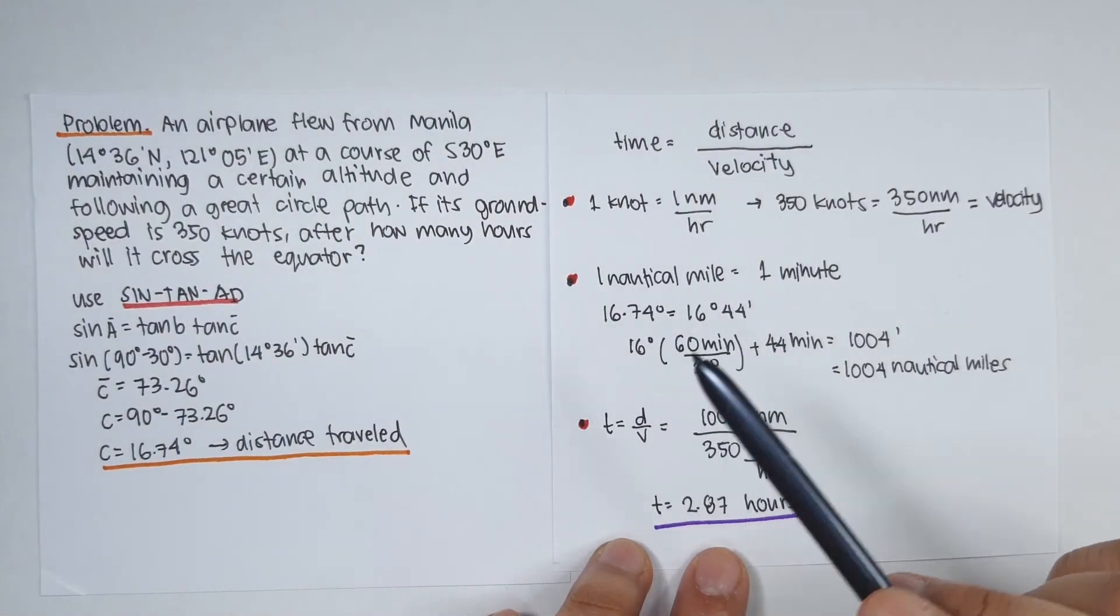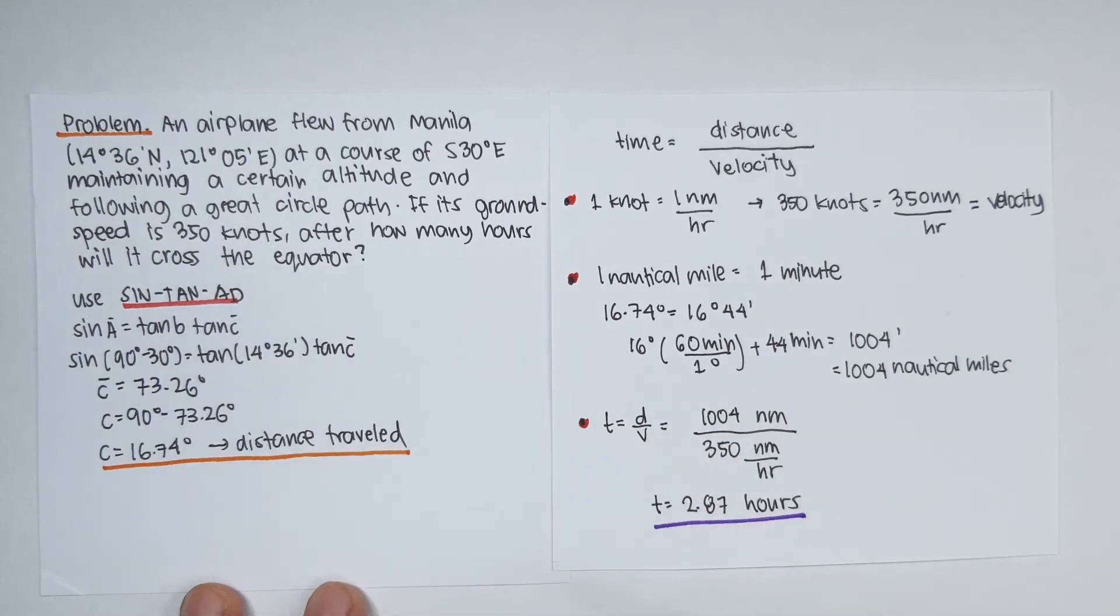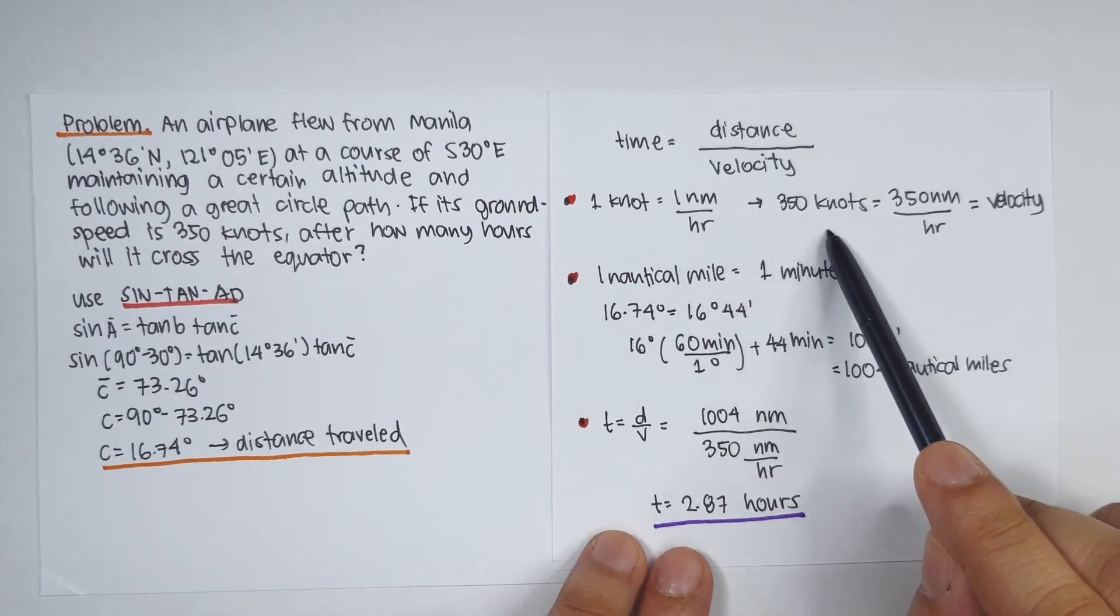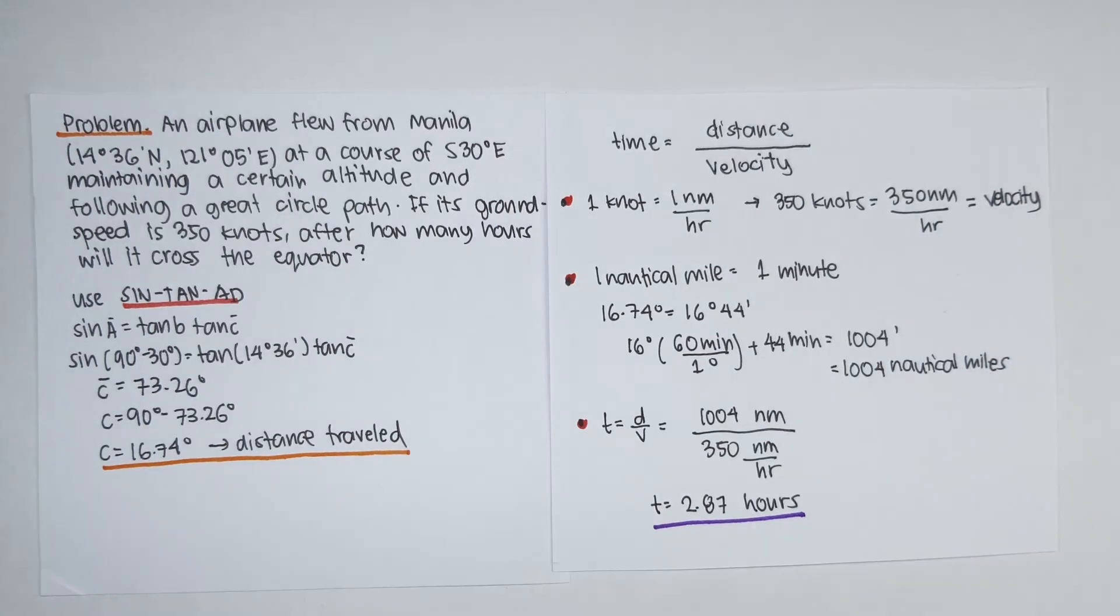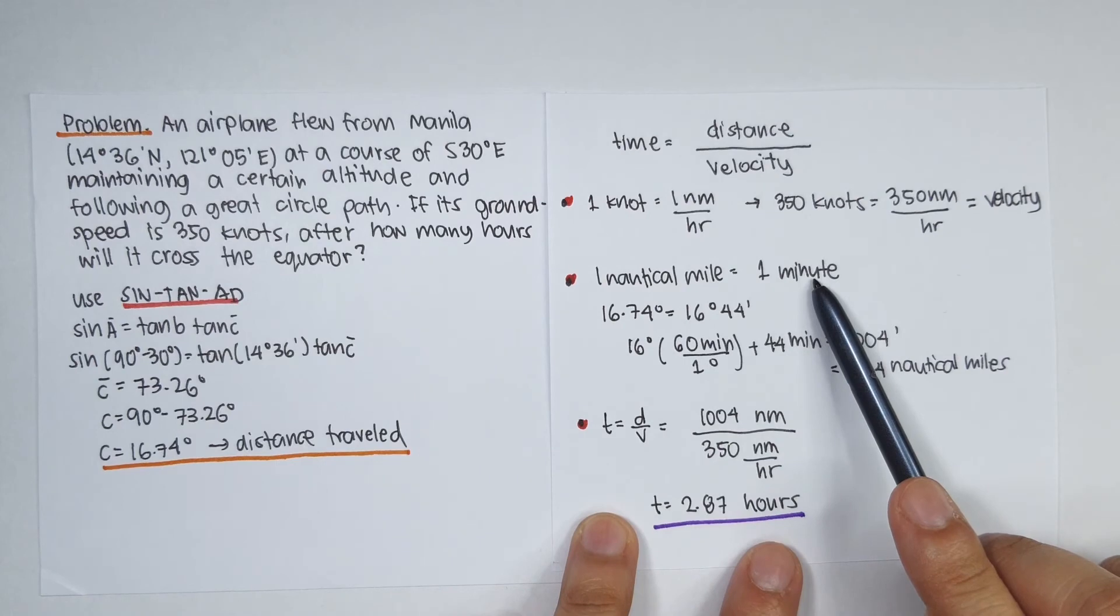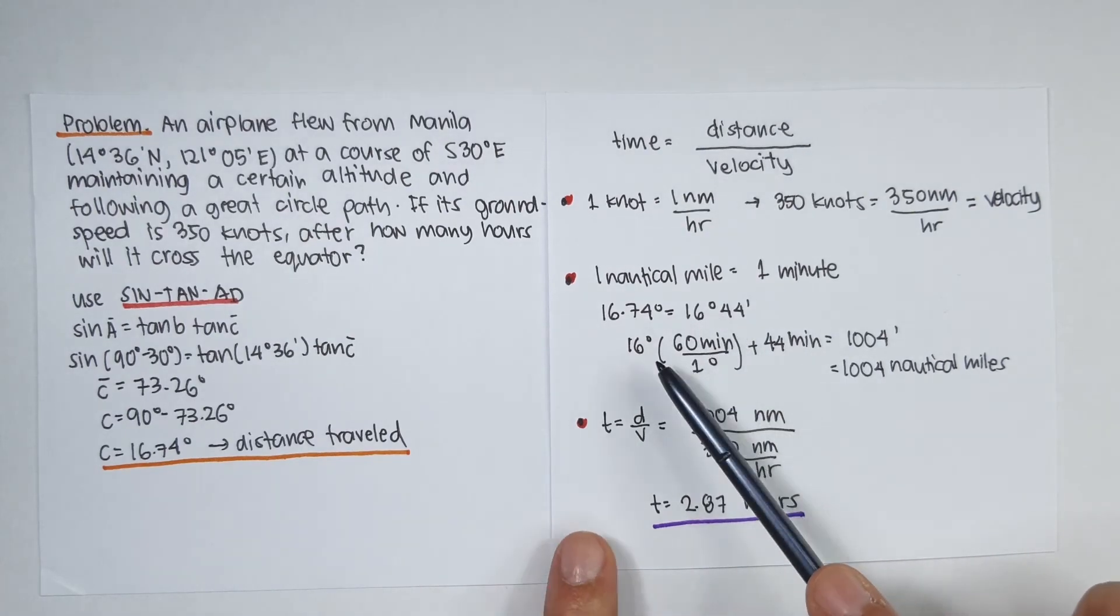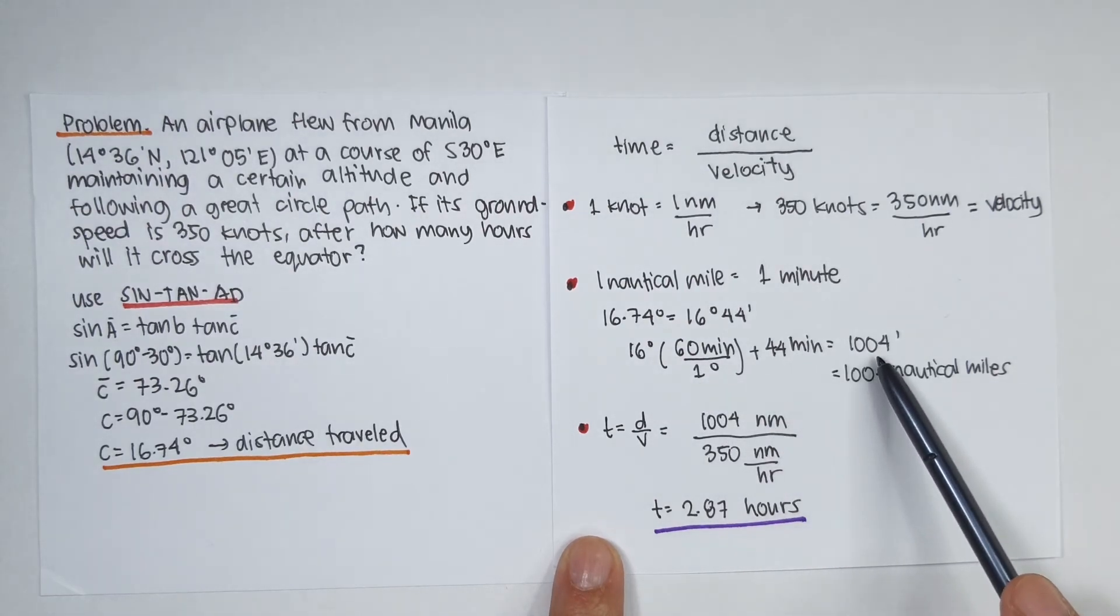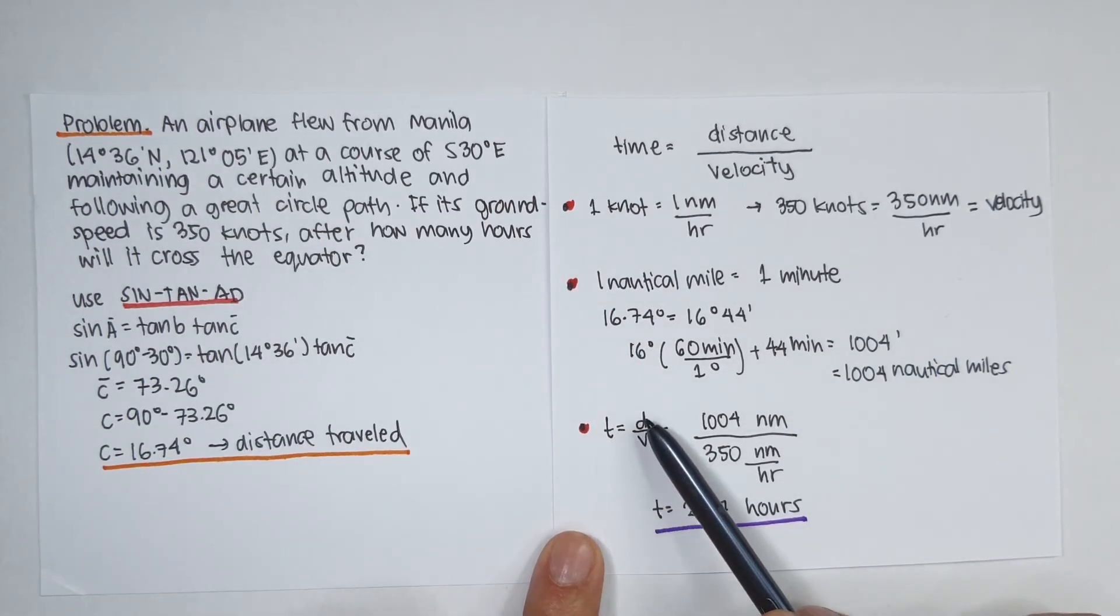So to solve for the time, we need to use the formula time is equal to distance divided by velocity, where velocity is equal to 350 knots. And take note that 1 knot is equal to 1 nautical mile per hour. So 350 knots is equal to 350 nautical miles per hour. So this is our velocity. For our distance traveled, let's convert it to nautical miles. So 1 nautical mile is equal to 1 minute. So 16.74 degrees is equal to 16 degrees and 44 minutes. Therefore, that is 16 degrees times 60 minutes per degree plus 44 minutes. That is equal to 1,004 minutes or 1,004 nautical miles.